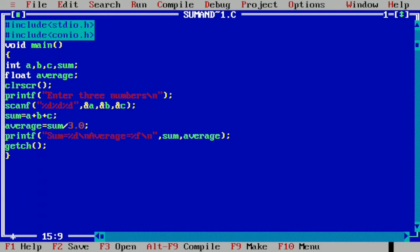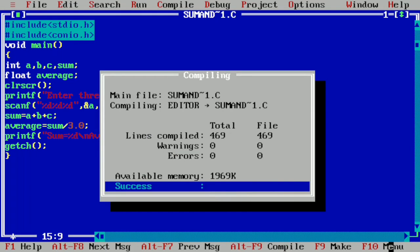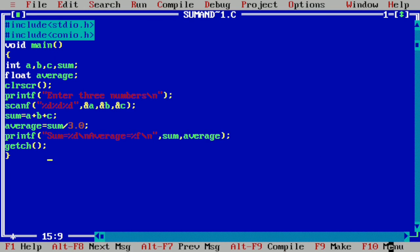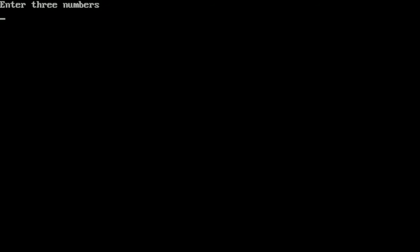Here I have already written this program in Turbo C++ integrated development environment to save your time. And now we are going to compile and run this program. Always you have to save the C program file with .c extension. Now let us compile this program by pressing Alt+F9. Now you can see it is showing success, there is no syntax error. Now I am going to run this program by pressing Ctrl+F9.